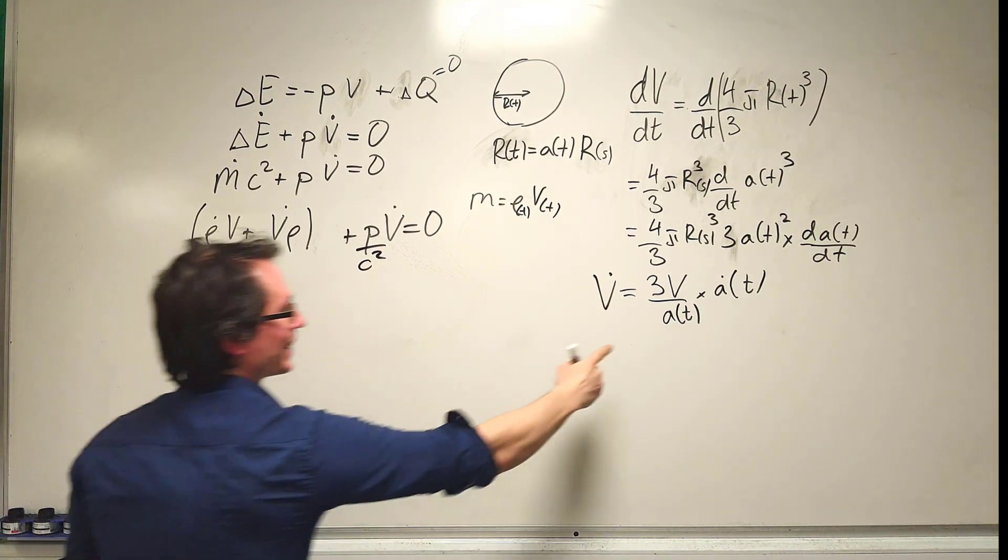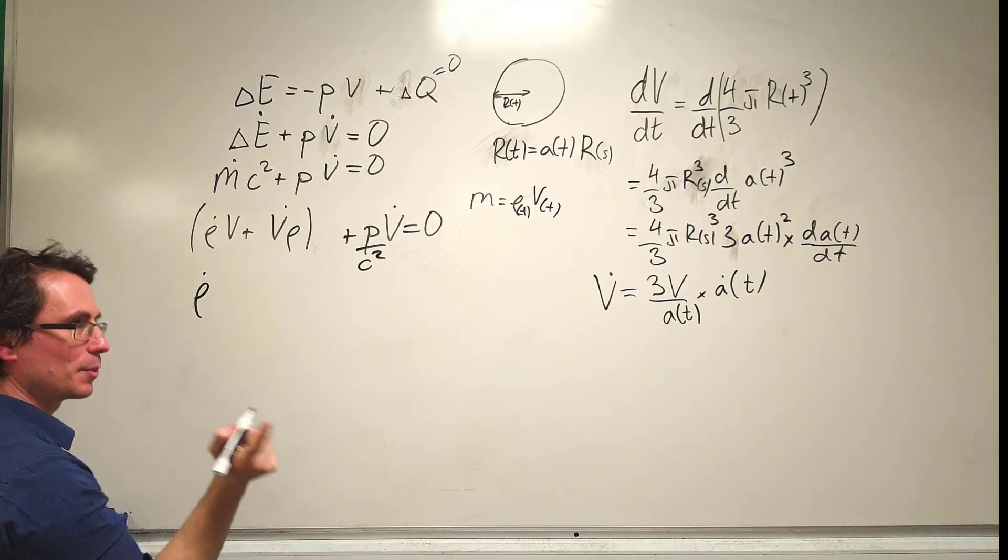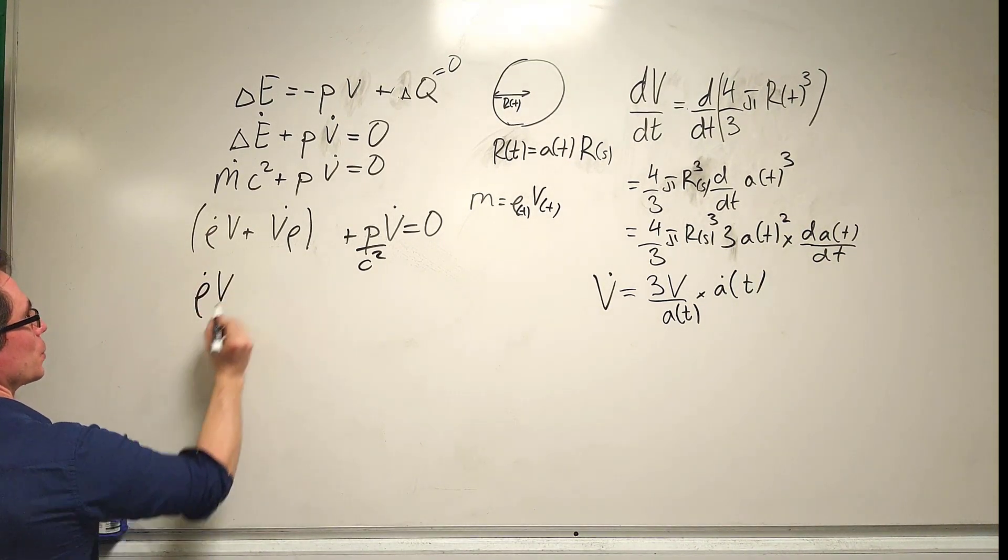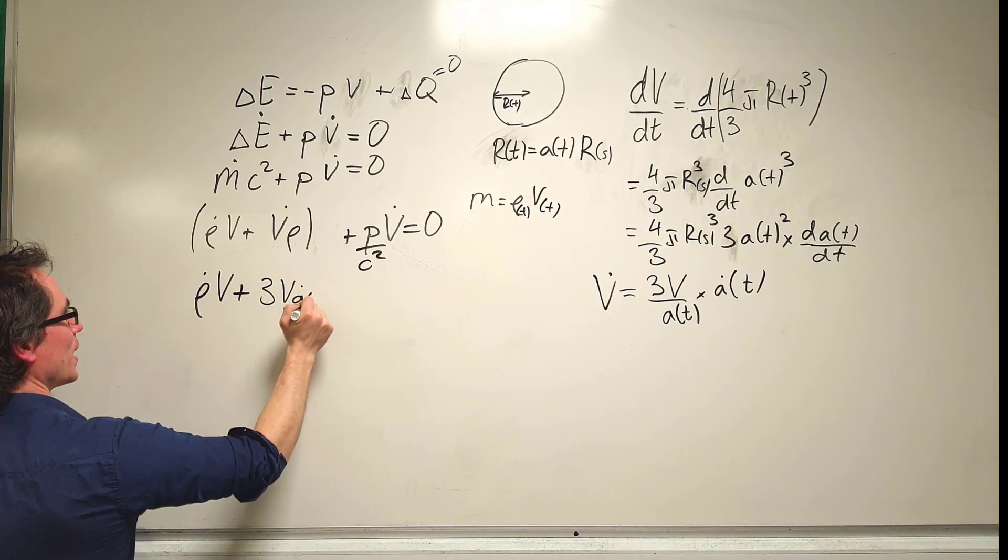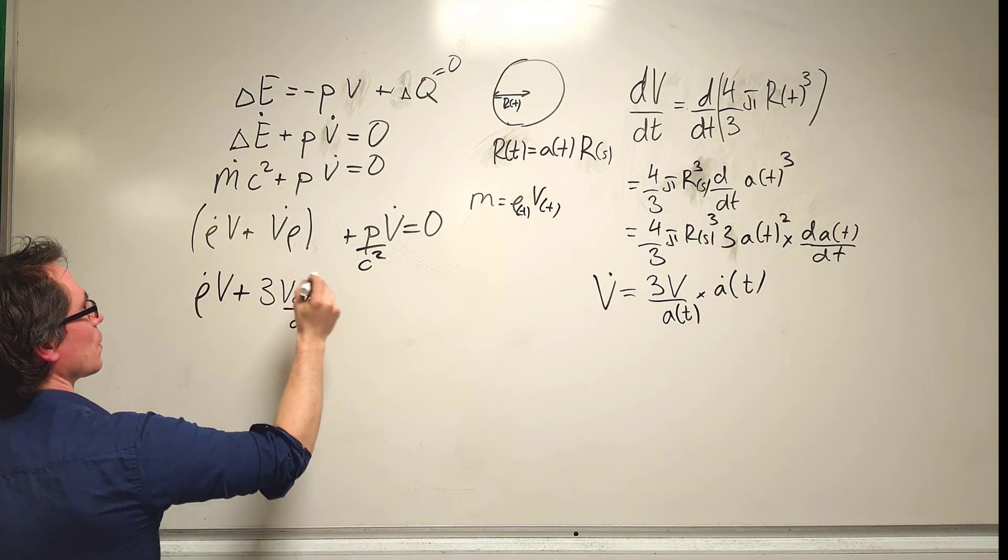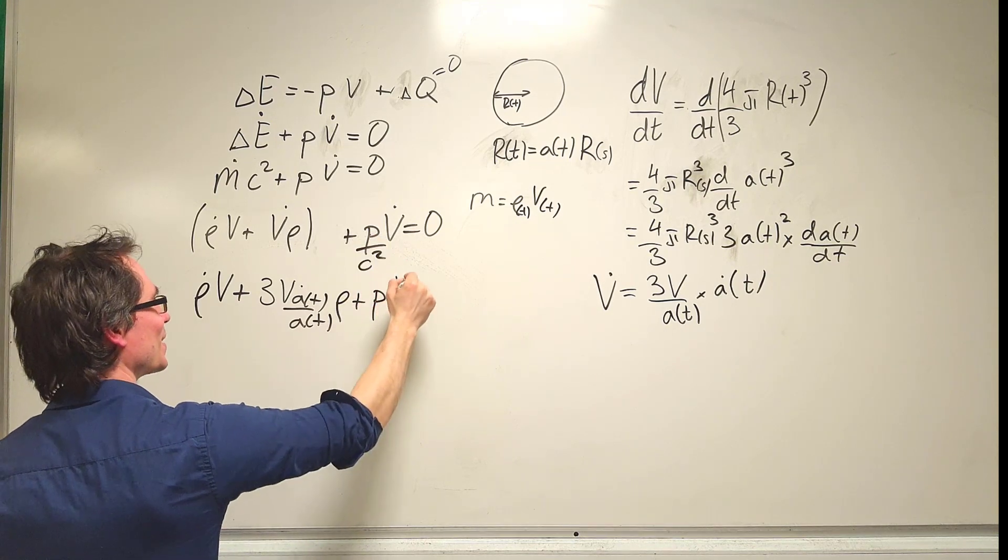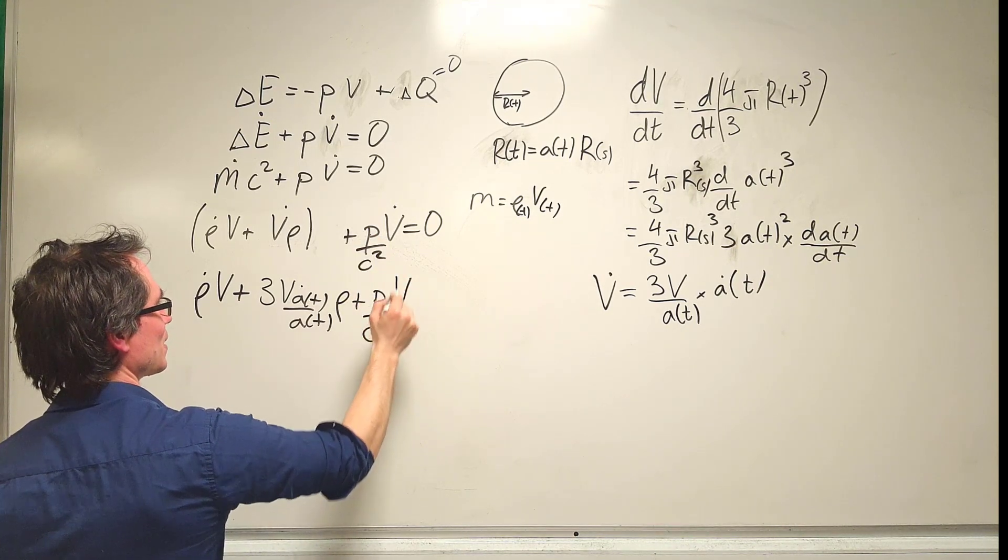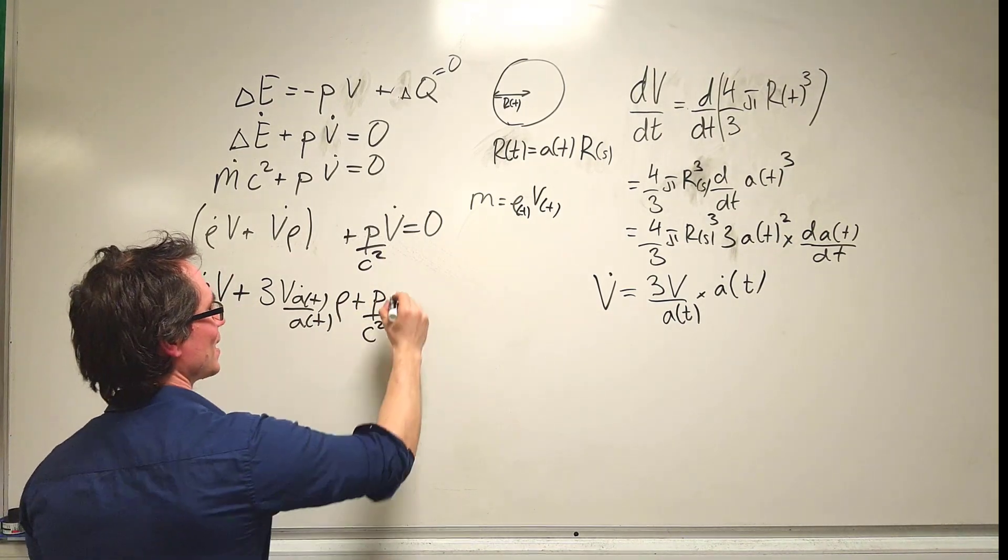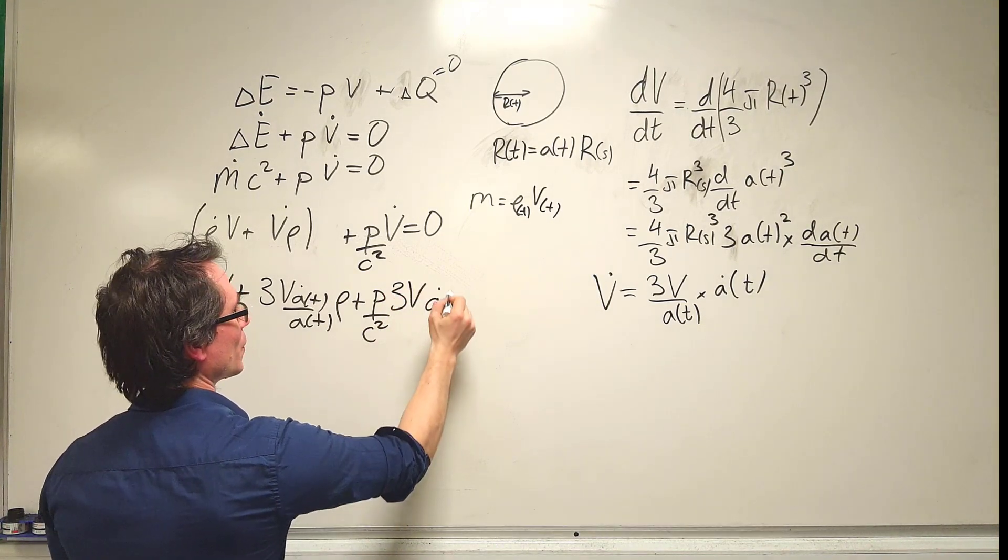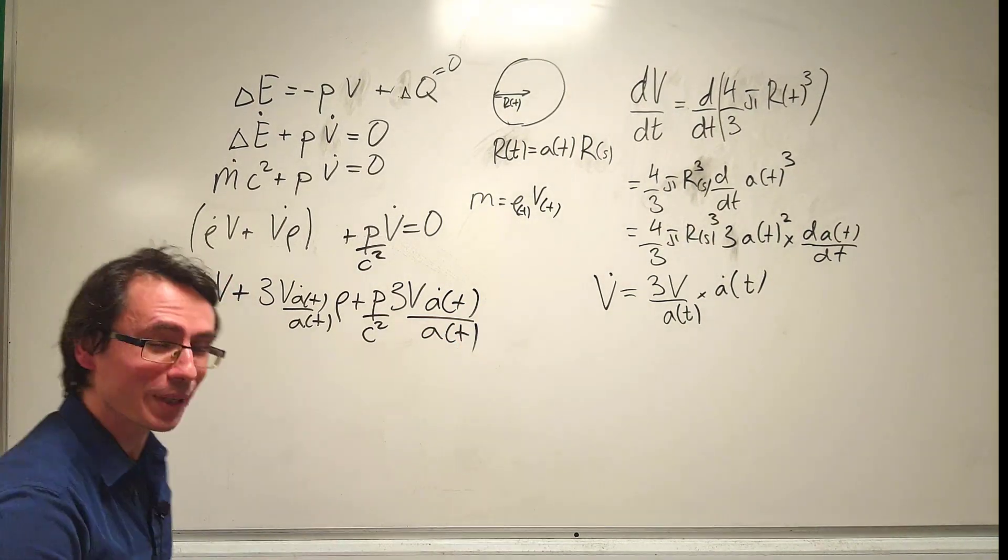I'm going to take this expression for V dot and plug it in. So we have the time derivative of the density multiplied by the original volume, plus V dot, which equals 3V a dot over a, times the density, plus p times V dot over c squared. Rather than V dot, I'm going to write 3V a dot over a(t) divided by a(t). We're almost there.